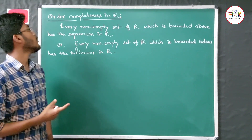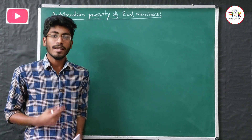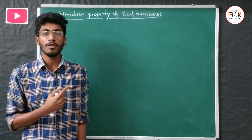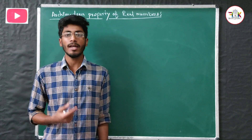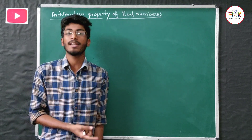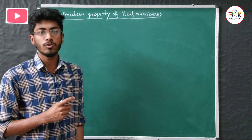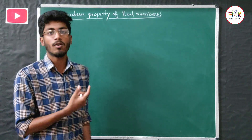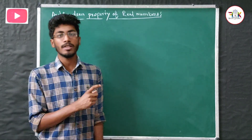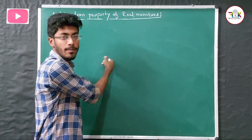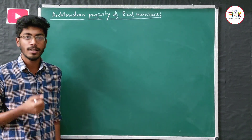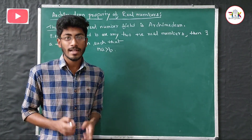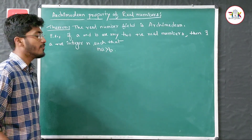This is the main definition of the Order Completeness Property in real numbers. Now, what will the Archimedean Property of real numbers be? There is a theorem related to this property. That theorem is called the Archimedean Property of real numbers. To prove this theorem, we will apply the Order Completeness Property definition. So let us write down the theorem: The real number field is Archimedean.